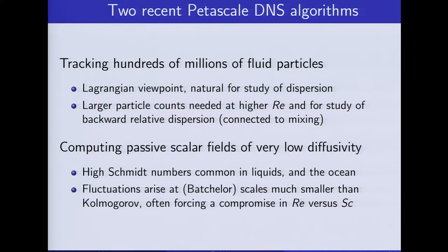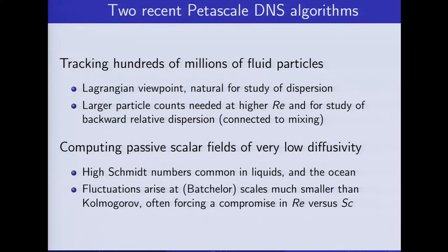I'm going to focus on the regime of low diffusivity or high Schmidt number. These are very common in nature, and perhaps the most important application is in the ocean. The difficulty is that fluctuations arise at the so-called Batchelor scale, which is much smaller than the Kolmogorov scale. So we are frequently forced into a compromise: do we keep the Reynolds number high and aim for a relatively modest Schmidt number, or do we hold the Reynolds number fixed and just focus on increasing the Schmidt number?